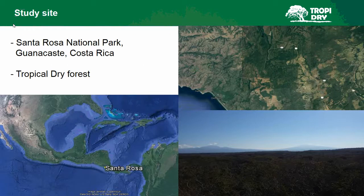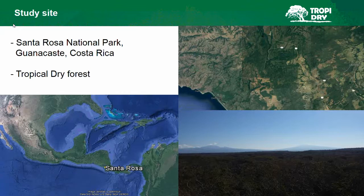The study site is Santa Rosa National Park in Guanacaste, Costa Rica — a tropical dry forest. You can see on the bottom right it gets a lot of albedo and the forest is pretty dense. It's pretty close to the ocean, so it receives lots of humid winds.